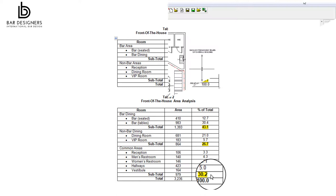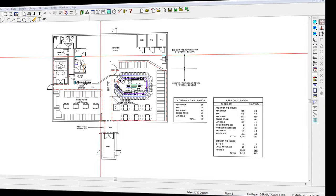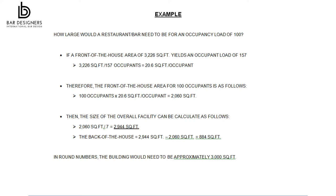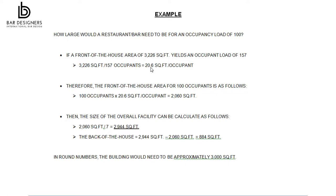What if you're planning a new restaurant bar with an occupancy load of 100? How large would the building need to be? The above information will serve as a good template for establishing an approximate building size. But given the variation of kitchen sizes, let's focus on how the front of the house space can be predicted. If the above 3,236 square foot front of the house space yields an occupancy of 157, we can predict that an occupancy of 100 can be calculated as follows: 3,236 square feet for 157 occupants yields 20.6 square feet per occupant. So for 100 occupants at 20.6 square feet per occupant, we have a total front of the house space of 2,060 square feet.